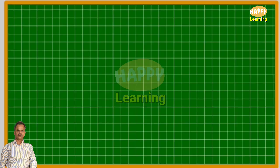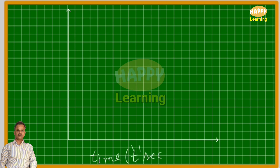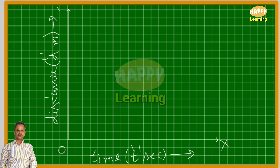Let us draw the graph. This is the x and y axis. Time t in seconds is taken on the x-axis. Let us indicate the origin, x-axis and y-axis. The time is noted as 0, 1, 2, 3, 4, 5, 6, 7, 8 and 9 on the x-axis. And the distances are noted as 2, 4, 6, 8, 10, 12, 14, etc. on the y-axis.